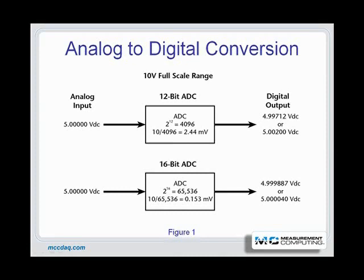ADC manufacturers frequently verify their device's accuracy and the effect of nonlinearities by running a code density test. They apply a highly accurate sine wave signal with precision amplitude and frequency to the device, and using a histogram for analysis, generate a distribution of digital codes at the output of the converter. A perfect ADC would produce only one vertical bar in the histogram for the specified input frequency and amplitude, because it measured only one value for every sample. But because of the ADC's inherent nonlinearities, it produces a distribution of bars on either side, representing digital words sorted into different code bins.